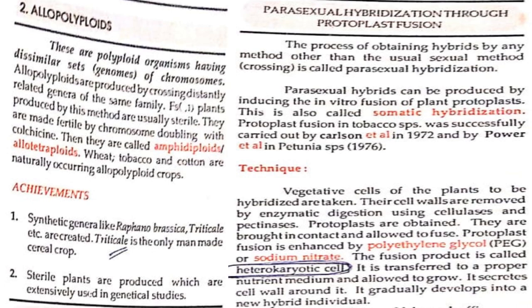Triticale is the only man-made cereal crop. Sterile plants are produced which are extensively used in genetic studies. Parasexual hybridization: through protoplast fusion, the process of obtaining hybrids by any method other than the usual sexual method is called parasexual hybridization. Parasexual hybrids can be produced by inducing in vitro fusion of plant protoplasts — this is also called somatic hybridization. Protoplast fusion in tobacco species was successfully carried out by Carlson et al. in 1972, and by Power in Petunia species.